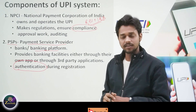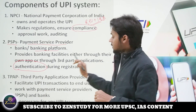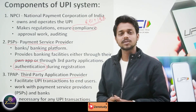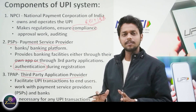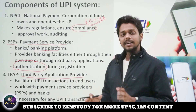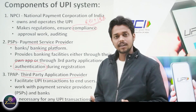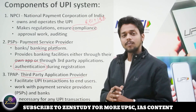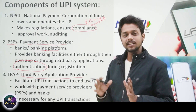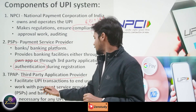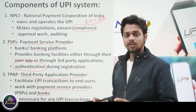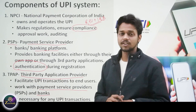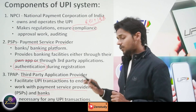The third component is the TPAP — Third Party Application Provider. Basically these are the apps — the third party apps that provide services. They are interlinked with PSPs. Banks are linked through what are called sponsor banks, and through them they can provide UPI infrastructure and UPI transactions. They work with payment service providers and banks. The TPAP is indispensable for UPI transactions.